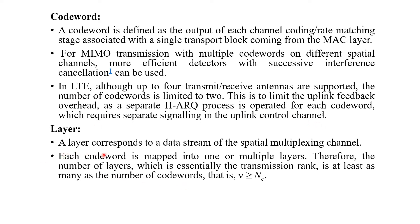Layer: A layer corresponds to a data stream of a spatial multiplexing channel. Each codeword is mapped into one or multiple layers. Therefore, the number of layers, which is essentially the transmission rank, is at least as many as the number of codewords. That is, V should be greater than or equal to N_C, where V is the number of layers and N_C is the number of codewords.